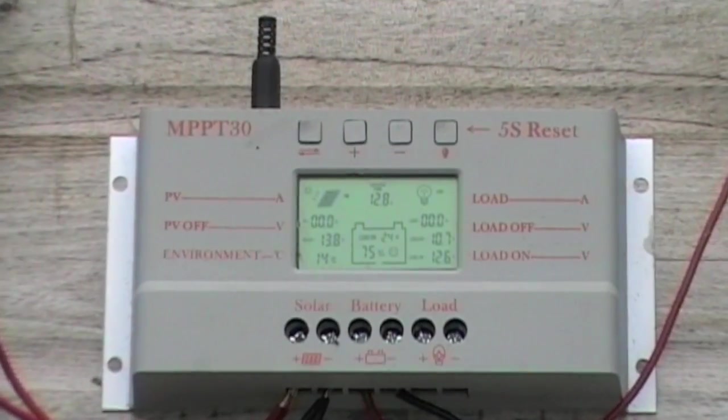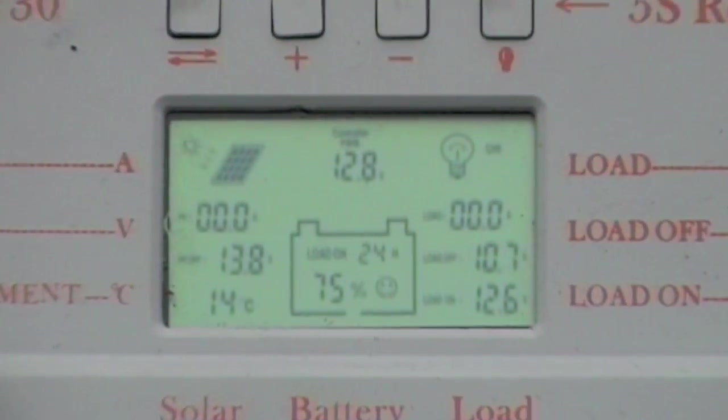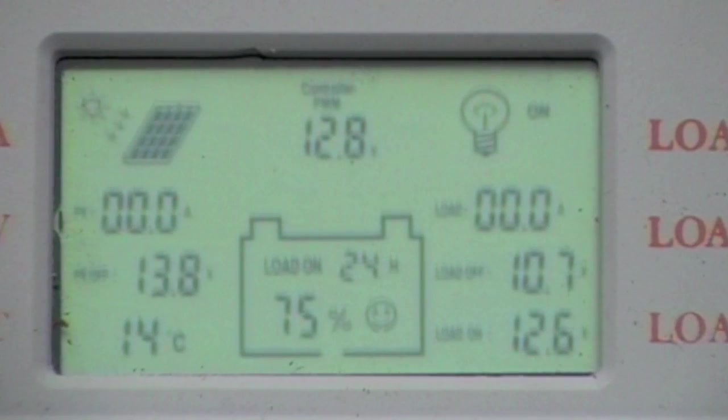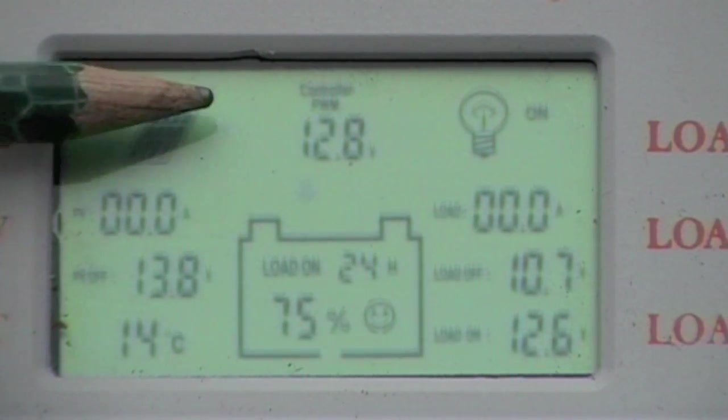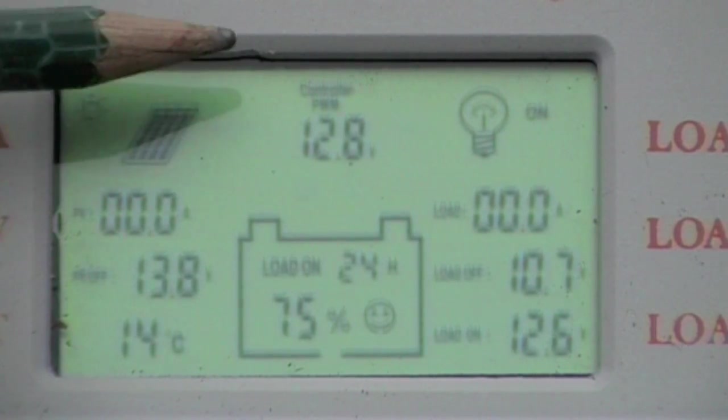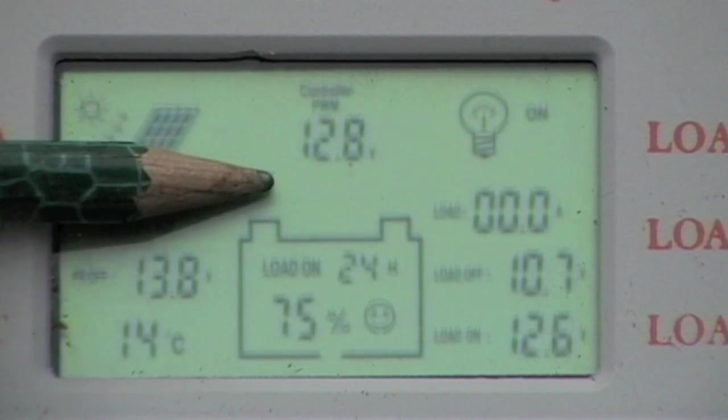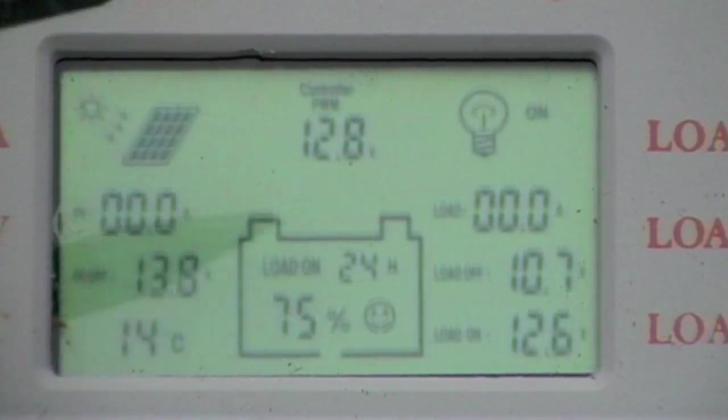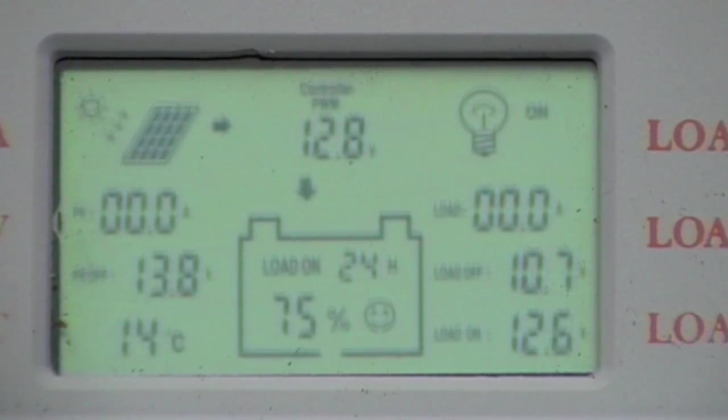I'll just zoom in on the display to show what's going on. This graphic top left represents the panel. The flashing arrows show it's generating power and charging the battery at 12.8 volts. The battery, the graphic in the middle here, is 75% charged and has a smiley face, so maybe it's not too bad.